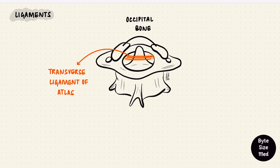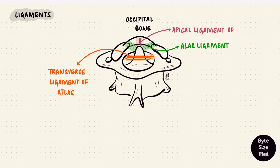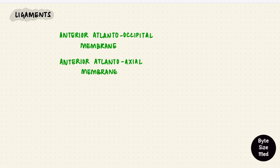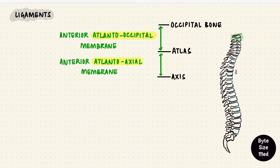From the dens extending laterally to the margins of the foramen magnum on the occipital bone are the alar ligaments. So we've covered the cruciate ligament and the alar ligaments. There's also an apical ligament of the dens, extending from the apex of the dens to the anterior edge of the foramen magnum. In addition, there is an anterior atlanto-occipital membrane and an anterior atlanto-axial membrane. The names tell you what they connect: atlas to the occipital bone, and atlas to axis. These are continuations of the anterior longitudinal ligament from the rest of the column.